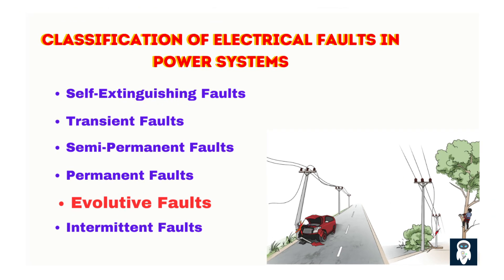Evolutive faults begin as single-phase faults and gradually escalate to involve multiple phases, often due to progressive deterioration of system components. They are initiated by minor insulation issues or mechanical stresses and gradually worsen, causing cascading faults that require prompt intervention to prevent further escalation. An example is aging insulation deteriorating under load stress, leading to multi-phase arcing faults. These faults are potentially catastrophic if undetected and highlight the need for regular system monitoring.